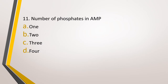Question number 11. The number of phosphates in AMP is? Option A: 1. Option B: 2. Option C: 3. Option D: 4. The correct answer is Option A — 1. The 'M' in AMP stands for mono, i.e., adenosine monophosphate, so there is 1 phosphate.